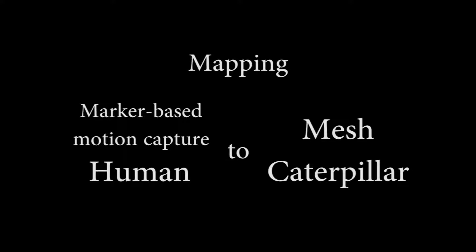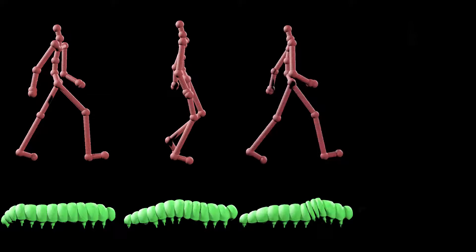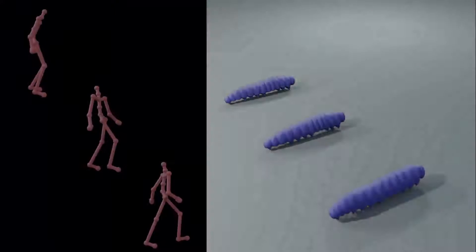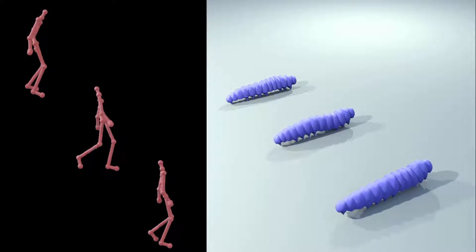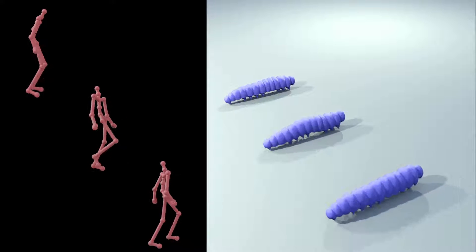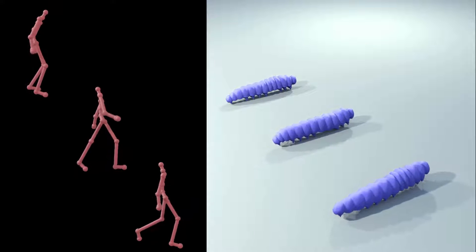The robustness of our mapping is demonstrated here. A single walk motion is mapped with four correspondences, and new walk sequences in different styles are used to drive the mapping. The bold and timid human walk styles are transferred to the caterpillar.